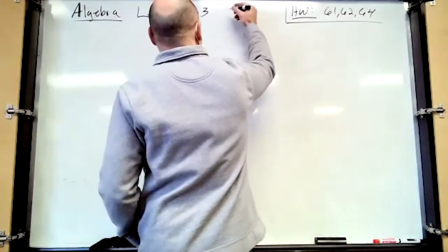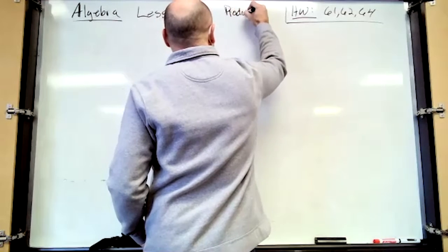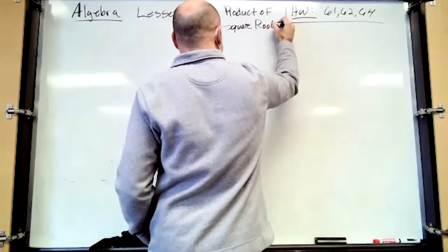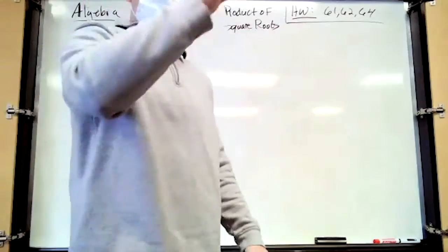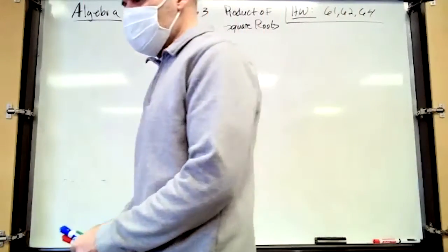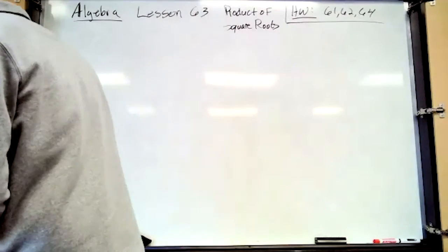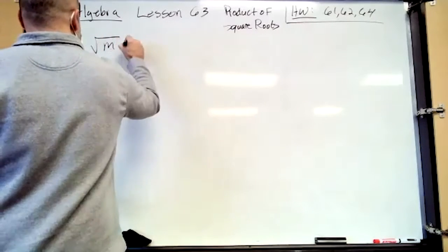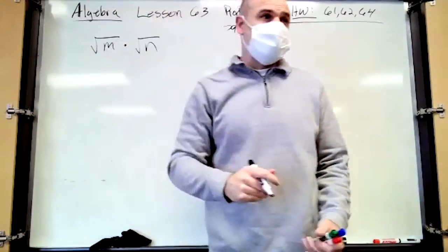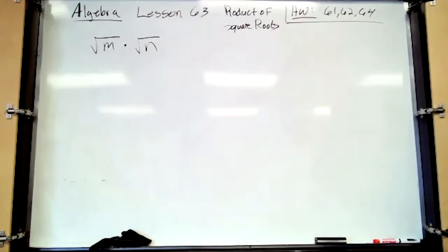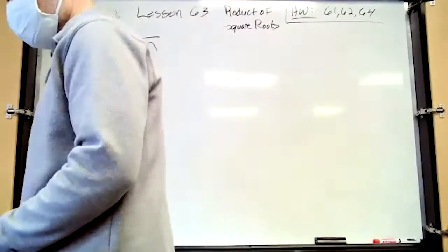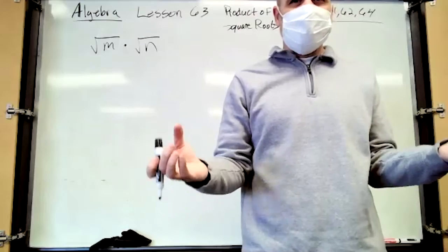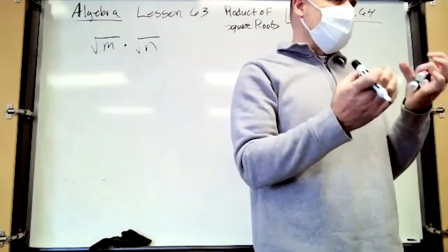We're going to talk about product of square roots. When I say radicals, I'm usually referring to square roots, because that sign in a square root problem is called the radical. So this is like radical something — we'll call it M — times another radical of something else. This is called the product rule for square roots. When you multiply the square root of something times the square root of something else, you can combine that into one big radical, the square root of that product.